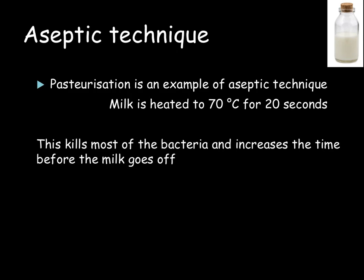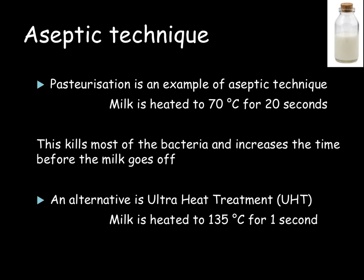An alternative to this is ultra-heat treatment. In ultra-heat treatment, milk is heated to 135 degrees C for one second. This is known as UHT milk. Pasteurisation is still the preferred method for heat treatment of milk because, even though it doesn't kill off all of the bacteria, it isn't as severe and it doesn't make the milk taste funny or destroy some of the vitamins found in the milk.